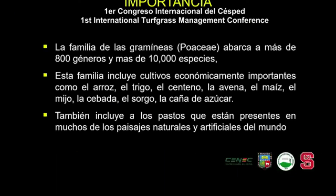La familia de las gramíneas en las Poaceae abarca más de 800 géneros y más de 10.000 especies. En esta familia se incluyen cultivos económicamente importantes como el arroz, el trigo, el centeno, la avena, el maíz, el mijo, la cebada, el sorgo y la caña de azúcar. Pero también incluye a los pastos que están presentes en muchos de los paisajes naturales y artificiales del mundo.